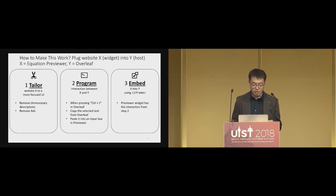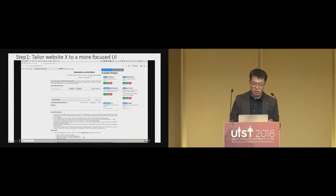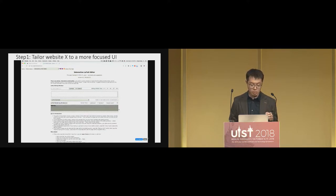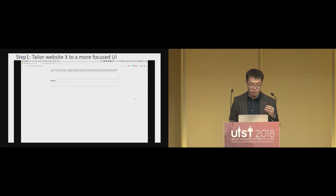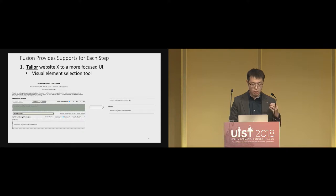Fusion runs as a Chrome extension and provides support for each step. For the first step — tailoring the UI — we open the extension and click a button called 'Crop the current page.' That activates a visual selector we can use to hover over and select the elements we need, here selecting the input and output panels. When done, clicking confirm hides all other elements and shows only the ones we need. Fusion provides a visual selection tool to help tailor the UI.